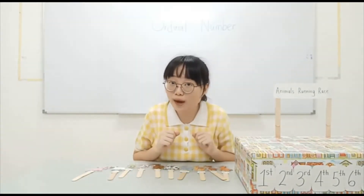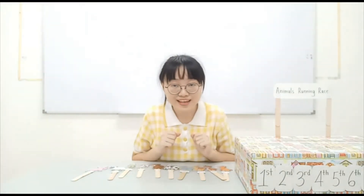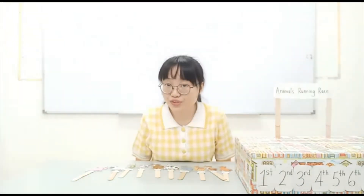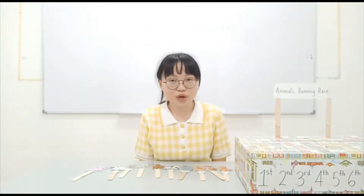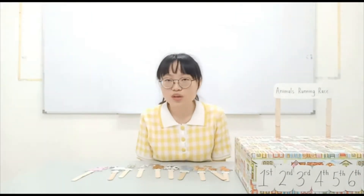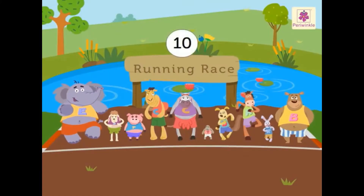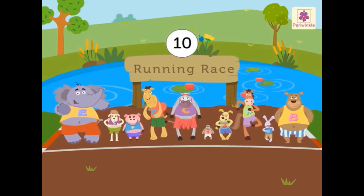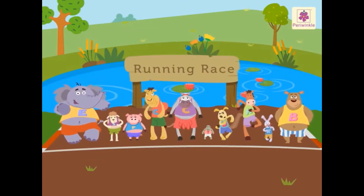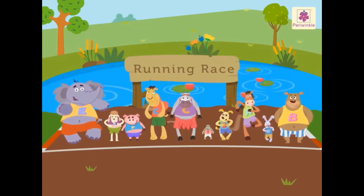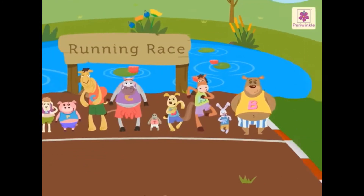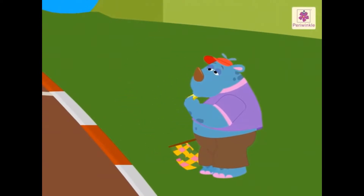Do you know who won the race? Let's watch the video so you can know the rank of them. There are ten animals living near this pond. They have organized a running race today. All of them are standing at the start position. The race begins.